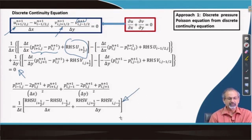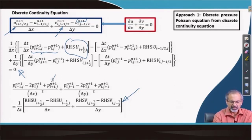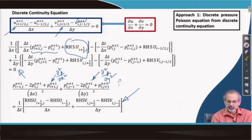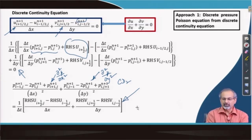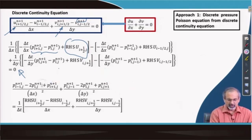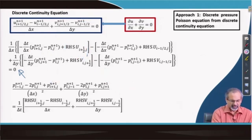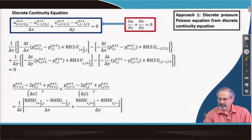You can clearly identify ∂²p/∂x² and ∂²p/∂y² in CD2 form on the left-hand side, with all source terms on the right. This is one possible approach where the discrete pressure Poisson equation is generated from the discrete continuity equation. You then solve this iteratively to generate the proper pressure and take calculations to the next time step.